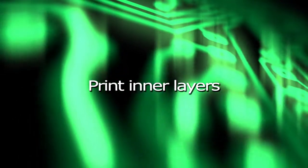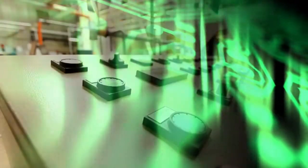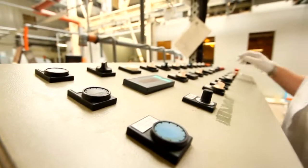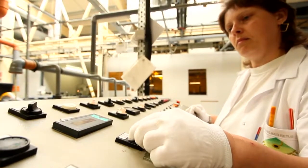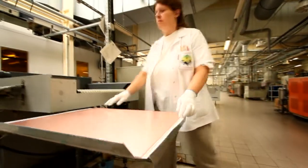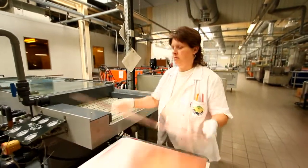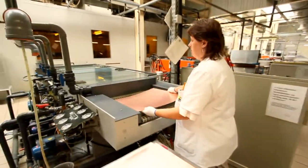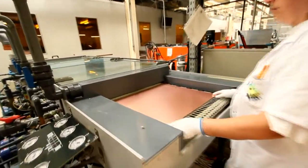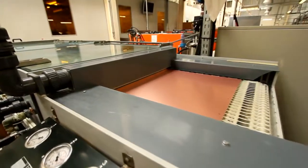Print Inner Layers. To produce the inner layers of our multi-layer PCB we start with a panel of laminates. Laminate is an epoxy resin and glass fiber core with copper foil pre-bonded onto each side. The first step is to clean the copper.